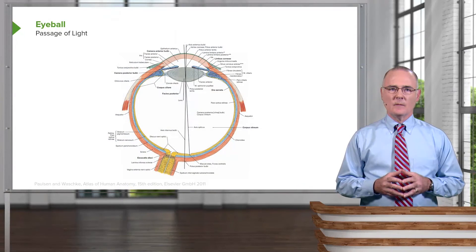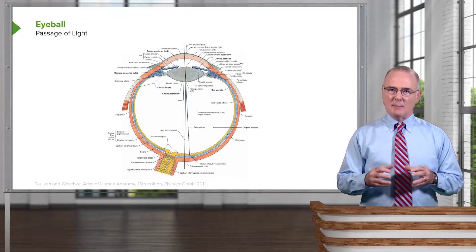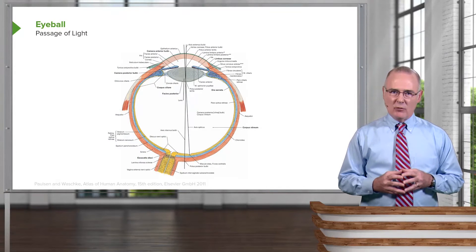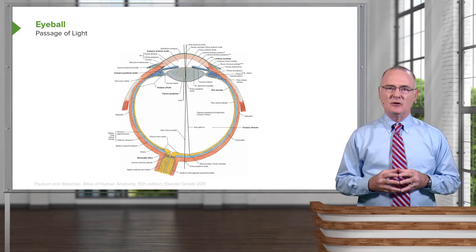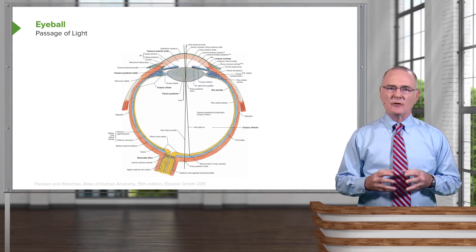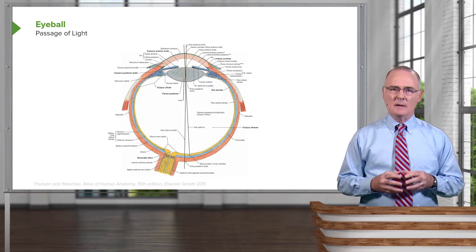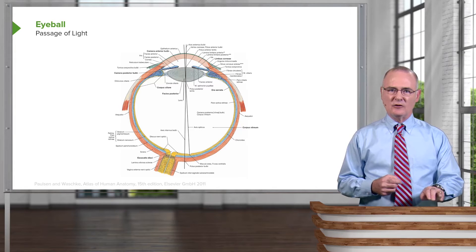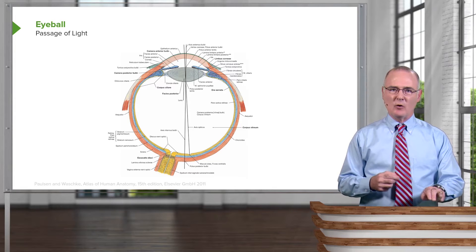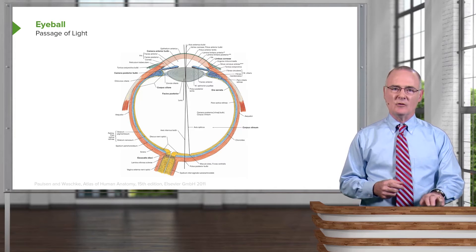Welcome to this presentation on the visual pathway. The first topic I'm going to guide you through on this journey along the pathway is the passage of light through the various components of the eyeball. This is necessary to focus the light on the fovea centralis, the point at which we have the greatest visual acuity.